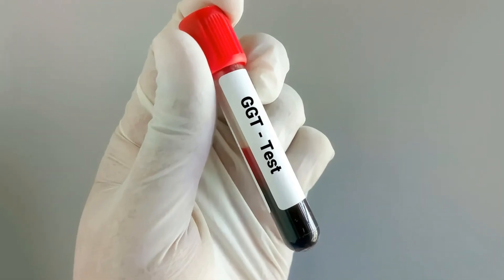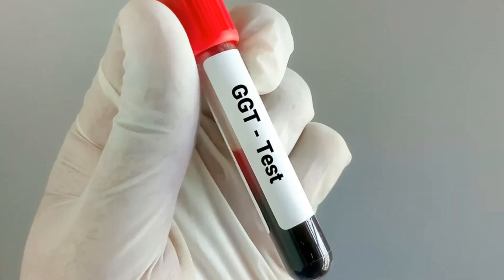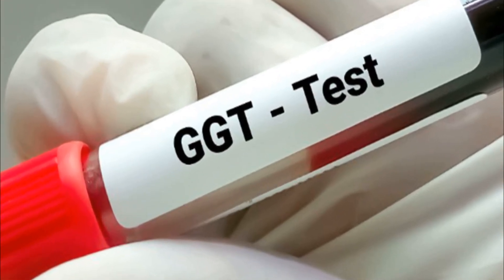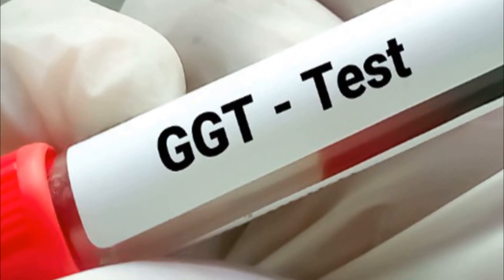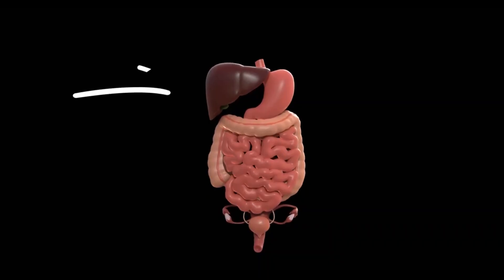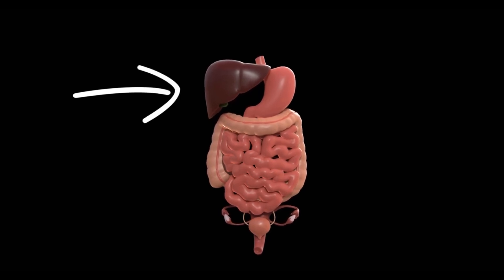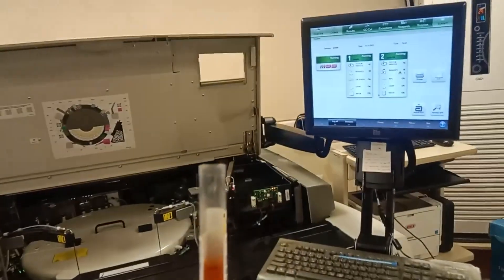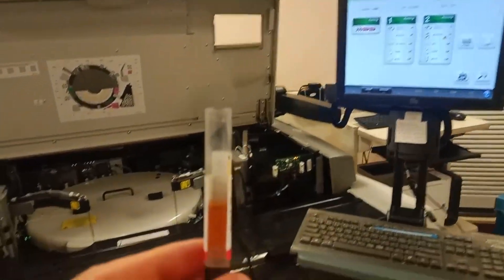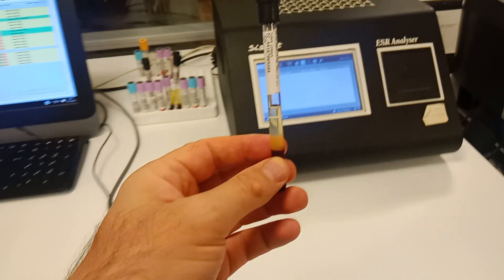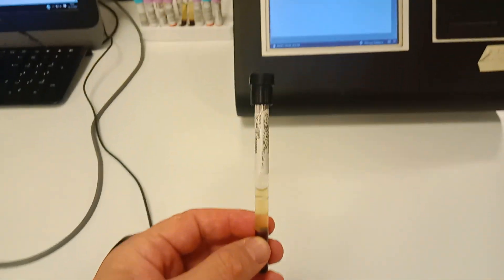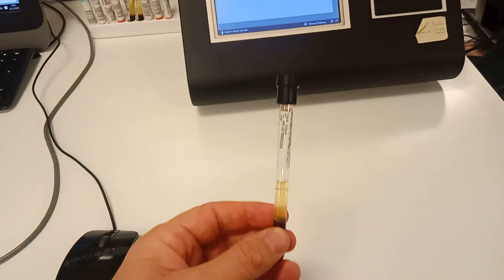The gamma-glutamyl transferase, GGT, test is a blood test used specifically to evaluate liver health. GGT is an enzyme found in high concentrations in the liver and bile ducts. This test is an important indicator of conditions such as liver disease, bile duct obstruction, and alcohol dependence. However, the GGT test alone cannot identify the specific cause of the damage.